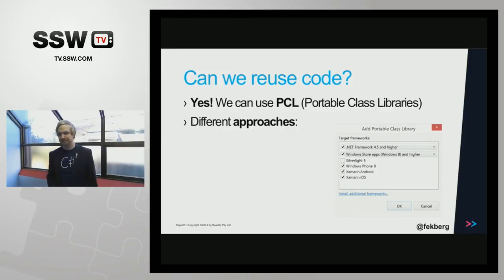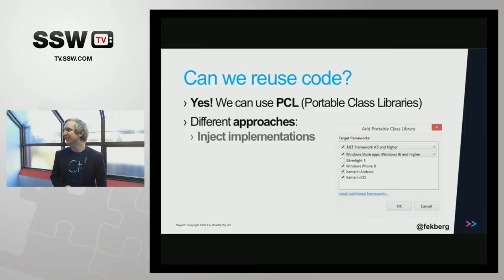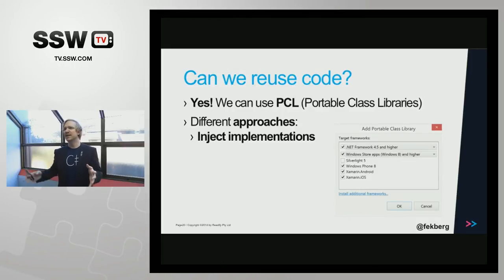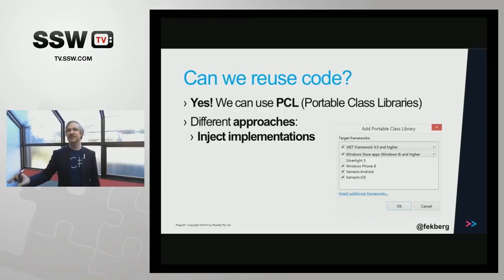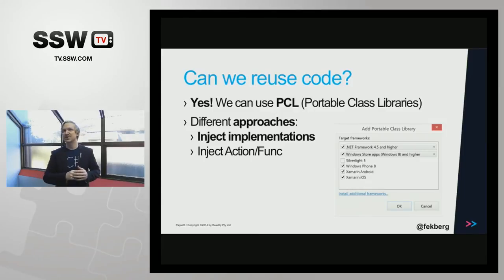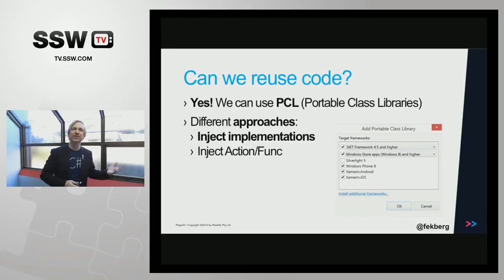The most common code sharing pattern is to inject implementations. Consider I have a shared library where storage works differently on all different platforms — iOS, Android, and Windows Phone. I want to access local storage on all devices without having redundant code, so I create an interface and just expect each device to give me an implementation of that. You can just expect to be able to save and load files. Another approach is to inject actions and functions, which I'd say is a bit looser than doing contracts — interfaces feel like they enforce you to do something more strongly.